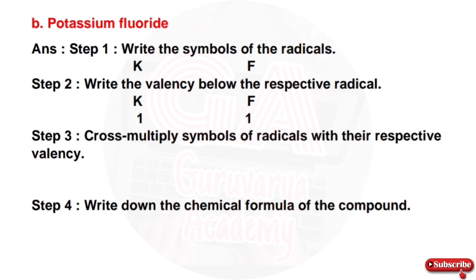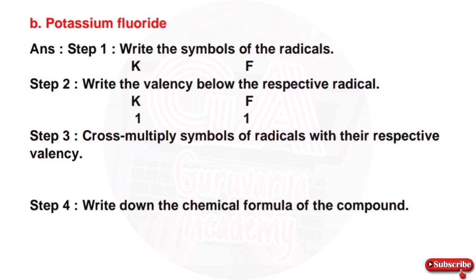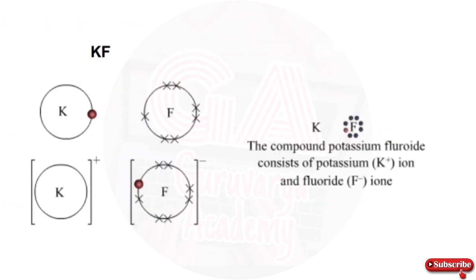Next compound: potassium fluoride. First step: write the symbols of the radicals — K and F. Second step: write the valence below the respective radicals — K valence 1 and F valence 1. Third step: cross-multiply symbols of radicals with their respective valence. Fourth step: write down the chemical formula of the compound — KF.